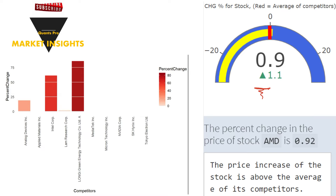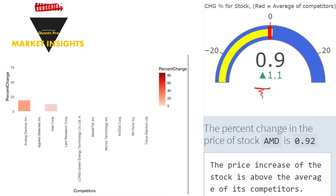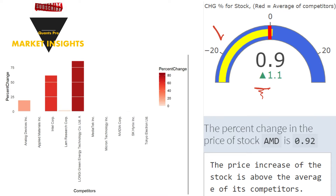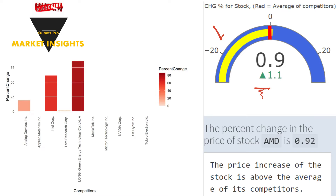First, let's talk about the price change compared to competitors. The percentage change in share price is extremely important when considering competitors. The investor monitors the stock's movements compared to competing performances and shapes their investment decisions accordingly. In the gauge chart, the price change of the stock on the last trading day is compared with its competitors. The yellow color shows the daily percentage change in the share price, and the red color gives the average of the percentage price changes in competitor shares.